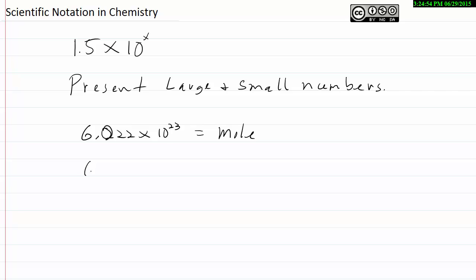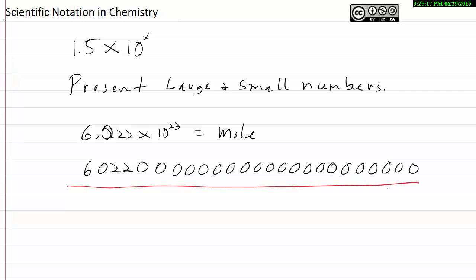If we were to write that in standard notation, 6.022 with all those zeros, I think I got that right. It's difficult to read, it's certainly difficult to write, this is cumbersome, hard to work with. 6.02 times ten to the twenty-third, you can see that that's a very large number.